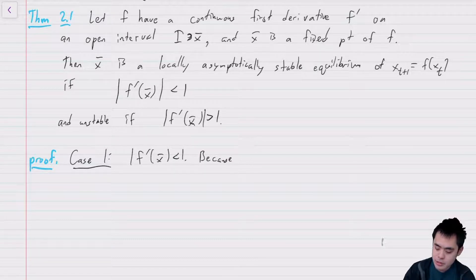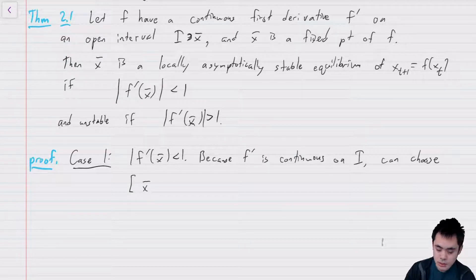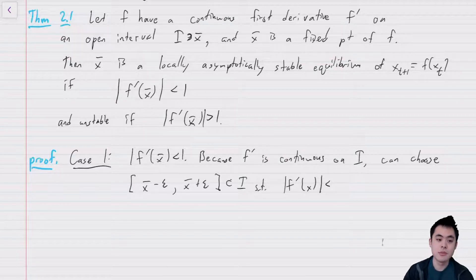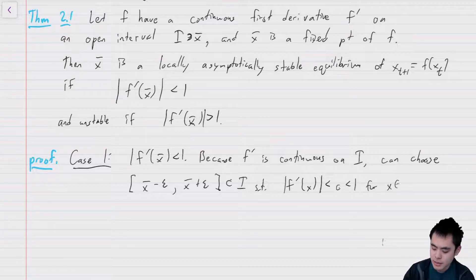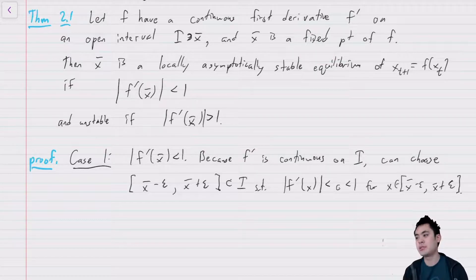Let's prove this. Case one: |f'(x-bar)| < 1. Because f' is continuous on I, we can choose a closed interval [x-bar - ε, x-bar + ε] contained in I such that |f'(x)| < c < 1 for all x in this interval. This is just by continuity — since the value at the equilibrium is less than 1, in some neighborhood around it, it also has value less than 1.